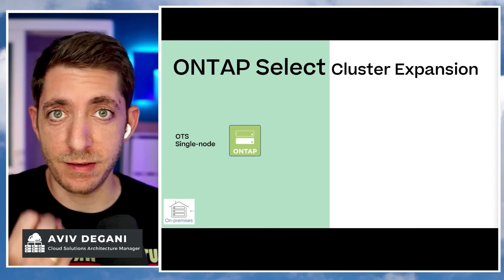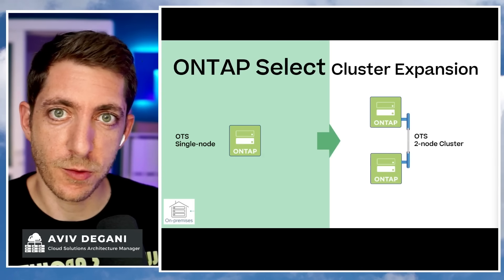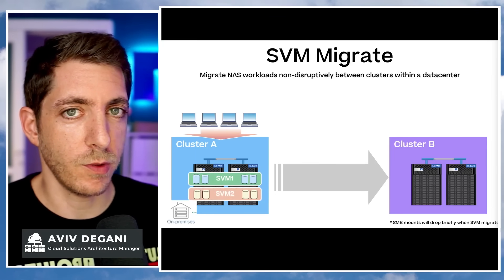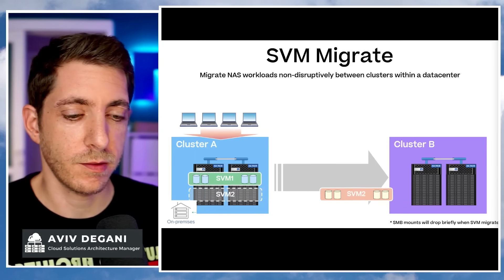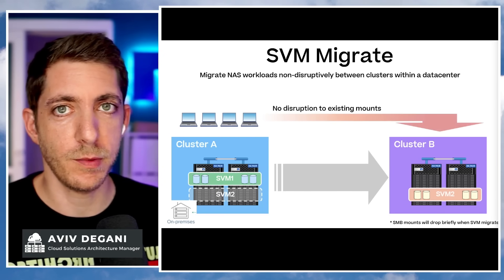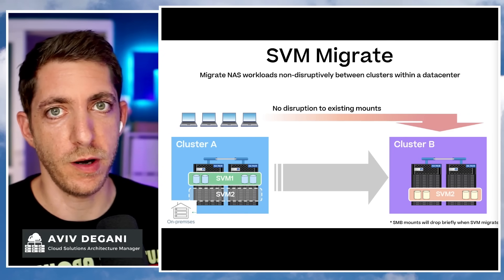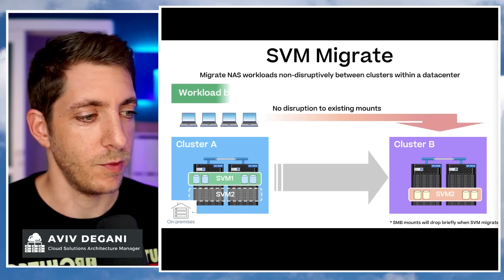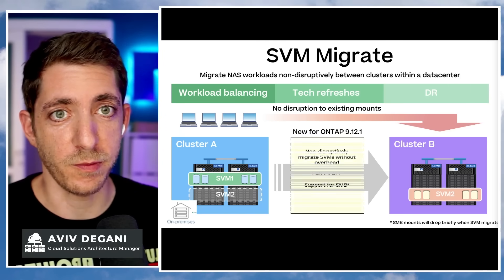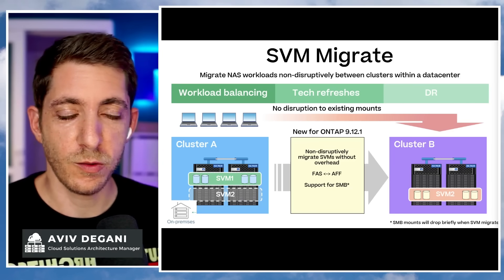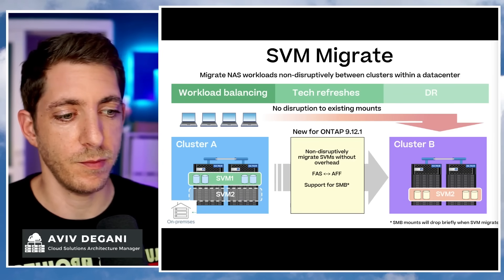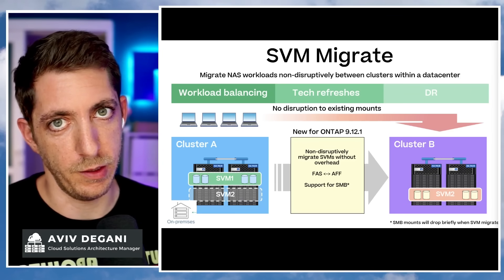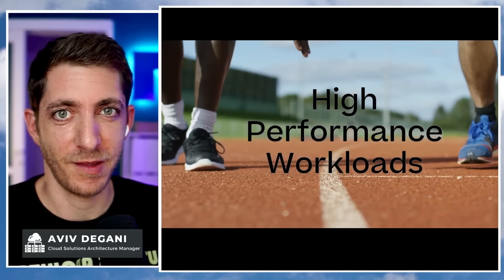ONTAP Select is expanding to HA — try it out. Another one for on-premise: SVM Migrate can now seamlessly move your SVMs in a single data center between clusters, non-disruptively, also between FAS and AFF systems, and it also added support for SMB.